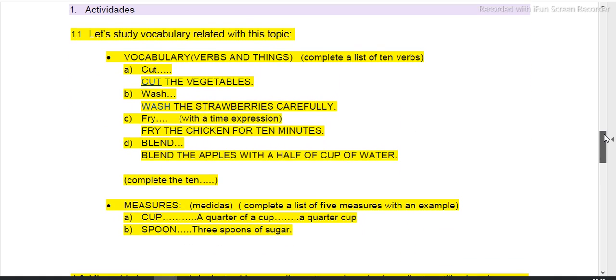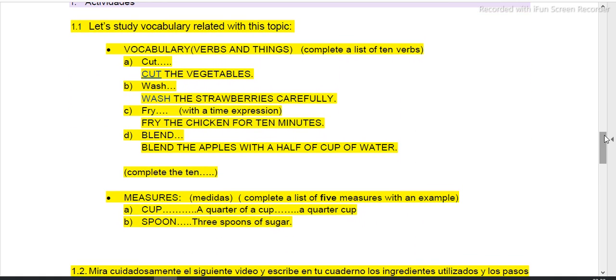And I have here the activities. Let's study vocabulary related with this topic. If we are talking about recipes, we need, for example, vocabulary, verbs, and things. Vamos a ver algunos ejemplos de verbs and things. Vamos a tener el verbo y una expresión en donde utilicemos y mencionemos algunas cosas. And it says complete a list of 10 verbs.